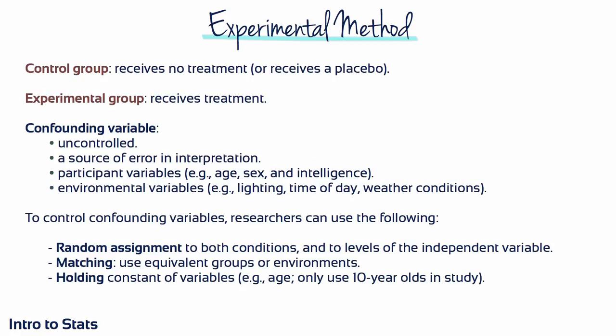Confounding variables are the enemy of good research. In the polio example, age and nutritional status of participants may be confounding variables, since very young and very old people are more susceptible to disease, and malnourished individuals are also at higher risk. An observed difference in polio incidence may be due to variation in these characteristics rather than the vaccinations. Whenever a study allows more than one explanation for the results, the study is said to be confounded, because it's impossible to reach an unambiguous conclusion.